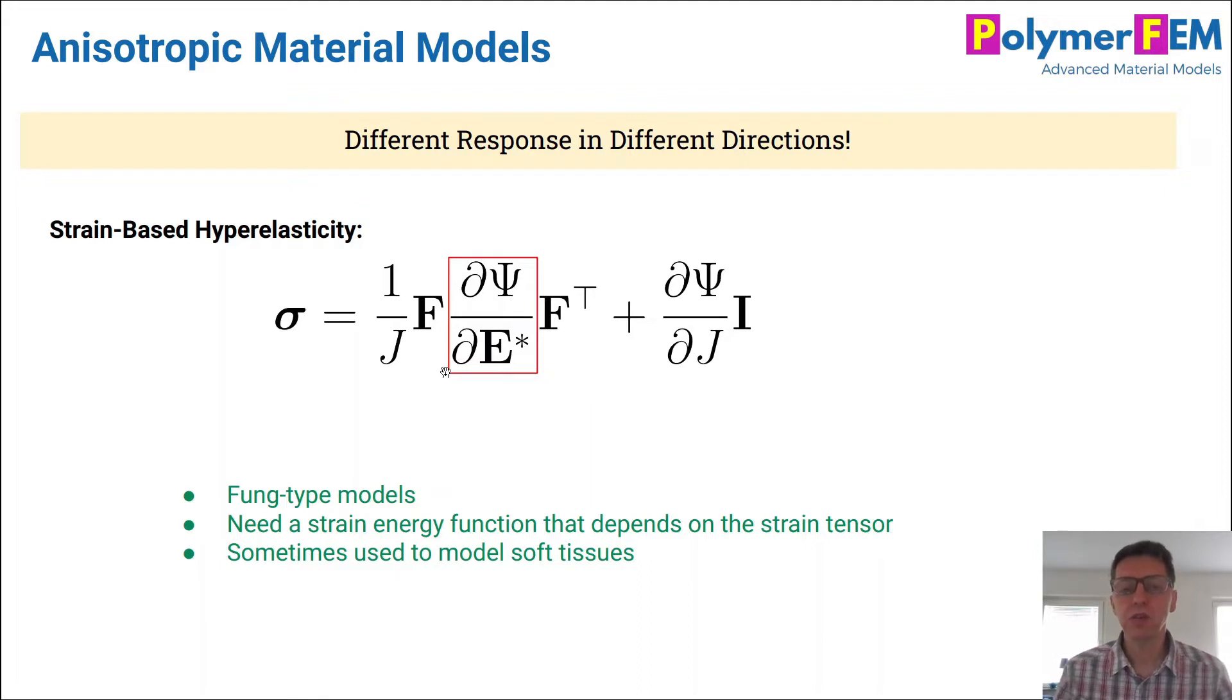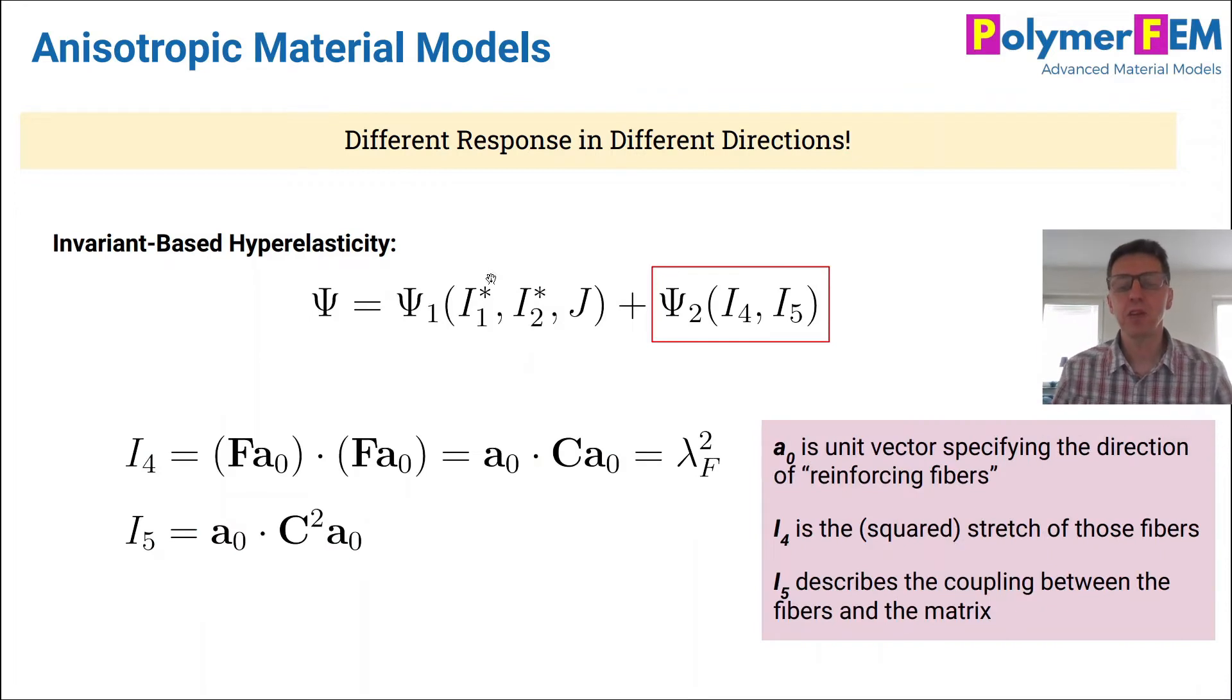The approach I use is to express the strain energy function in terms of invariants instead. So for isotropic hyperelasticity we have a strain energy function that depends on the three invariants that are typically used: I1, I2, and J. To make this anisotropic it's very simple.